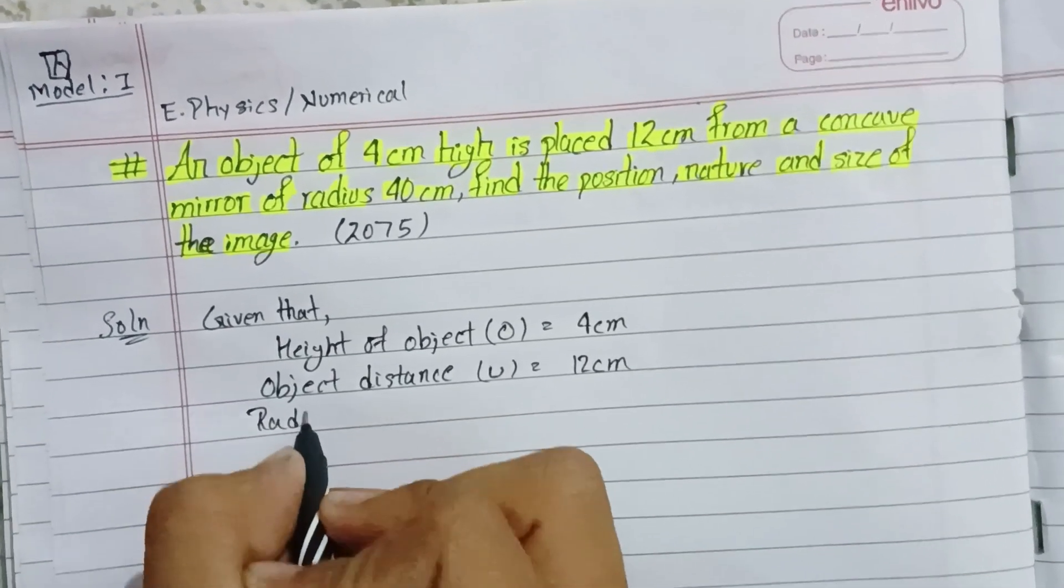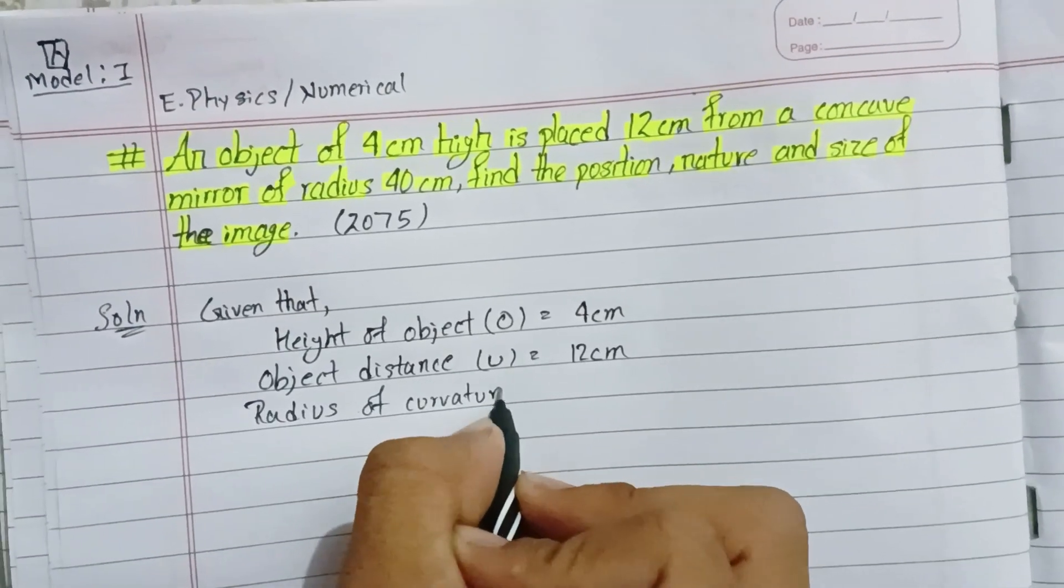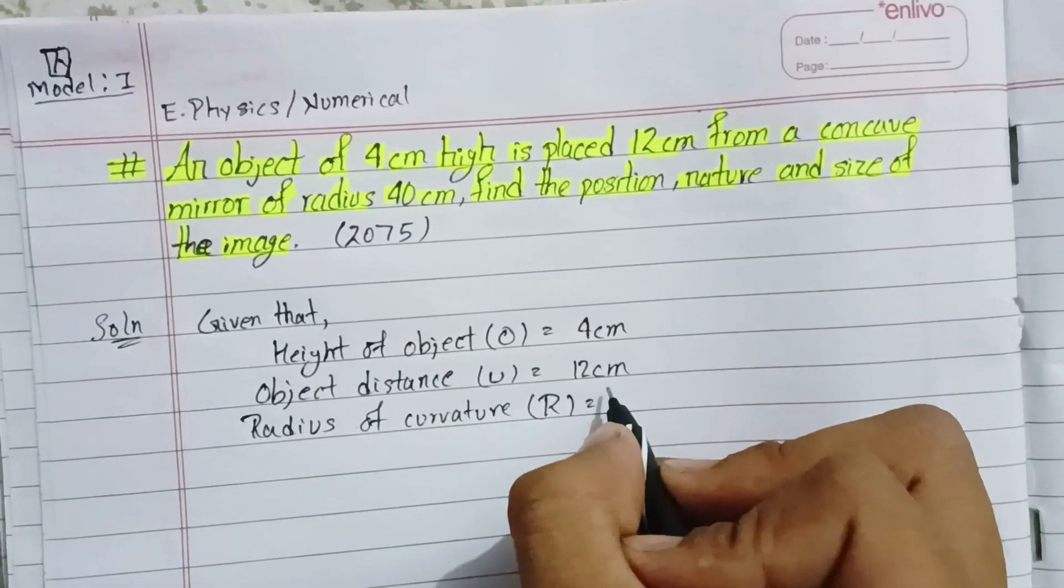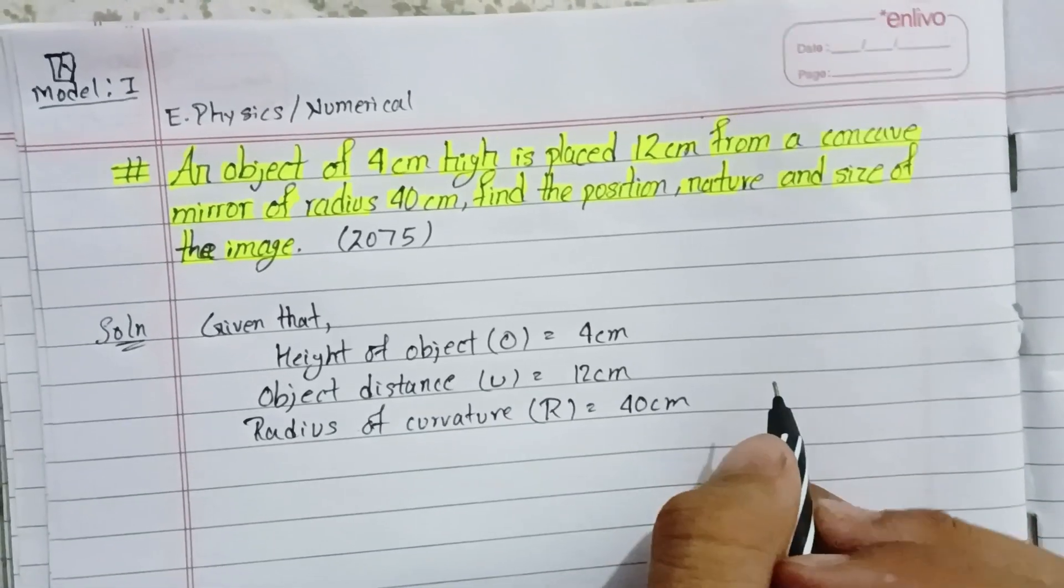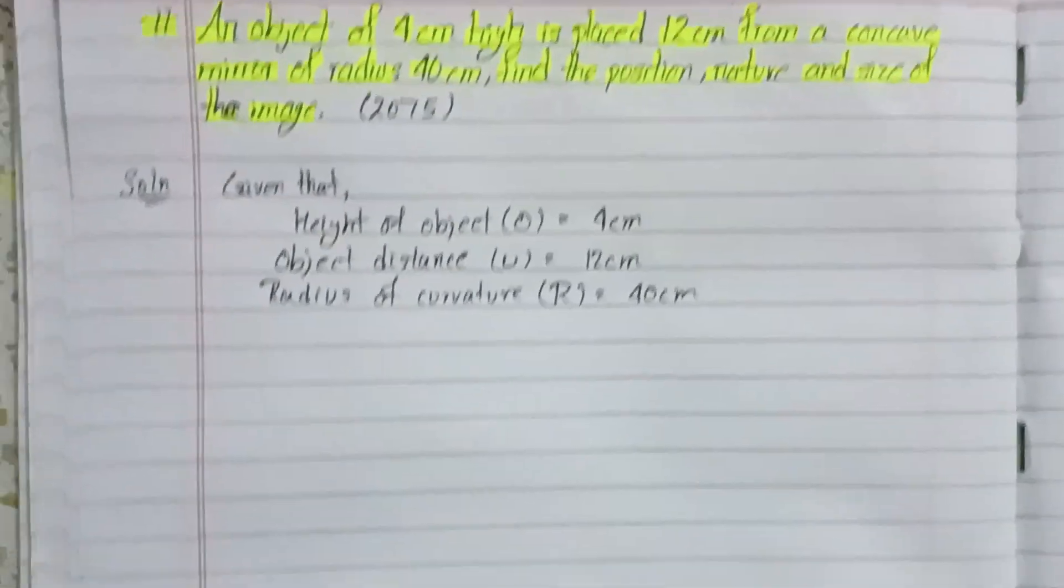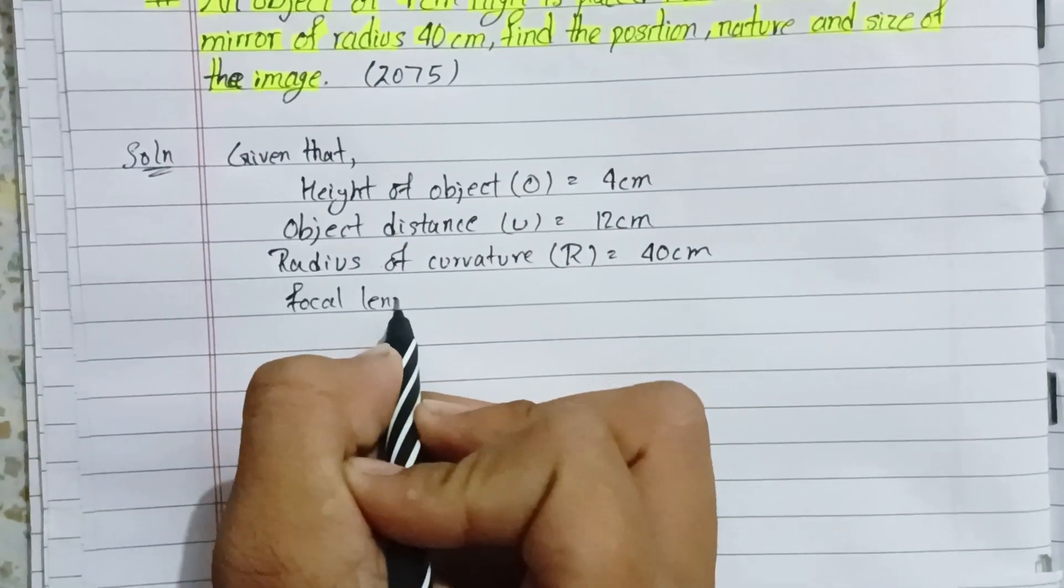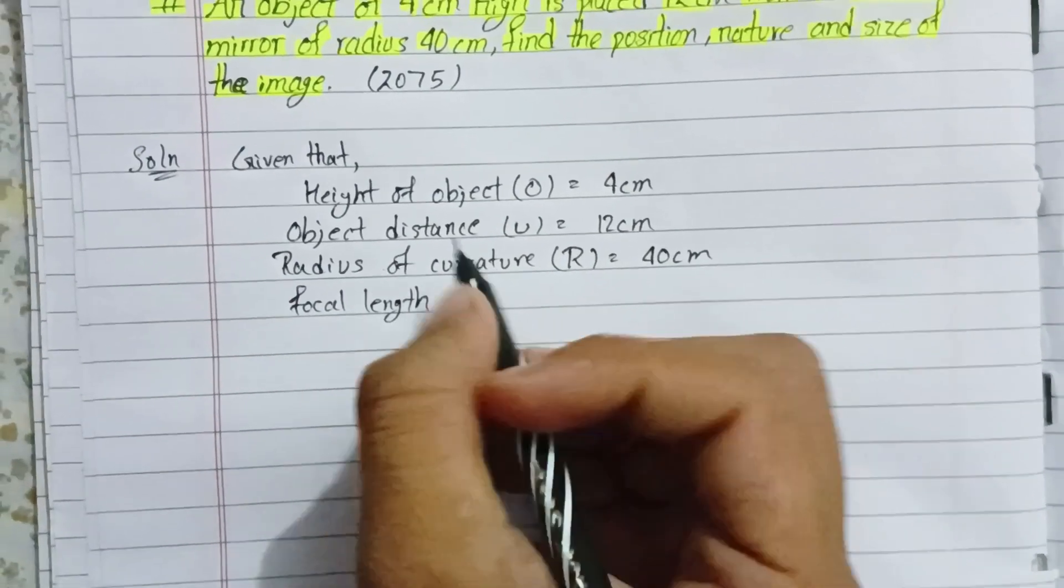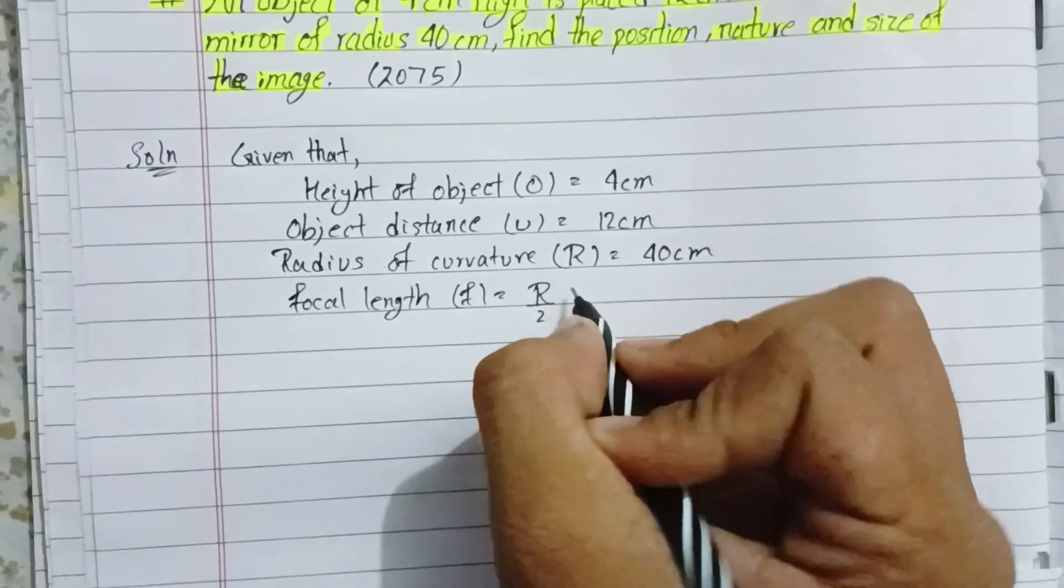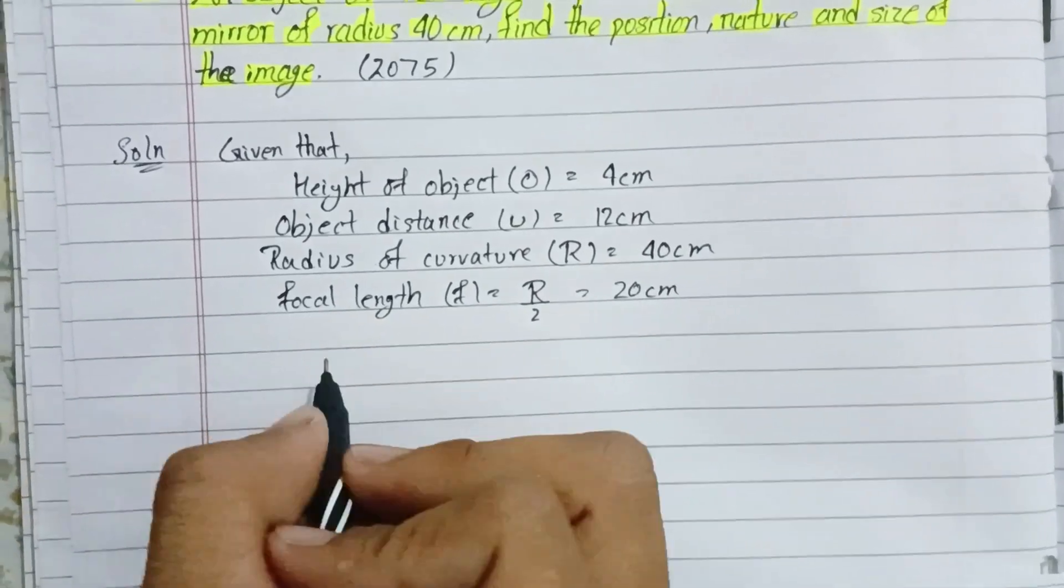Now for focal length, using the formula f equals R by 2, we get f equals 40 by 2, which equals 20 cm.